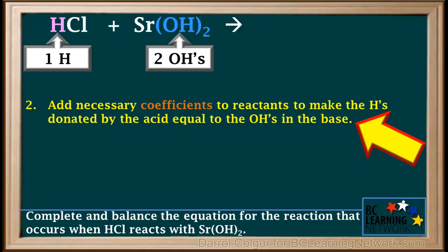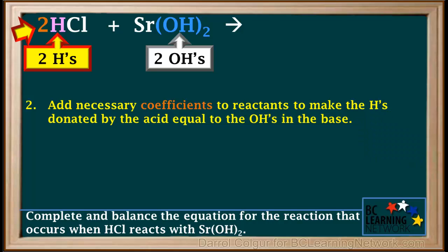Next, we add necessary coefficients to reactants to make H's donated by the acid equal to the OH's in the base. Adding the coefficient 2 in front of HCl gives us a total of two H's donated by the acid. So the number of H's donated by the acid is now equal to the number of OH's in the base, as both are equal to 2.